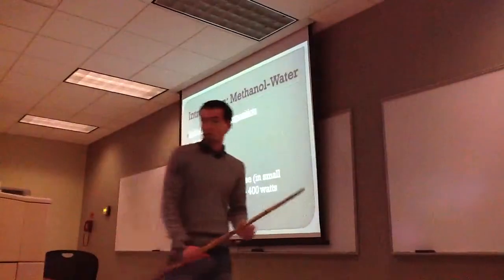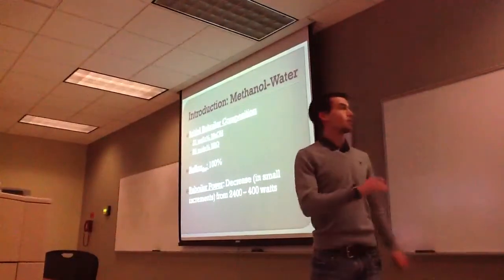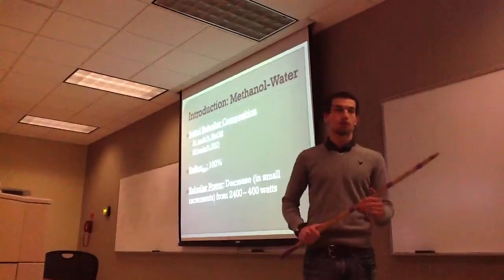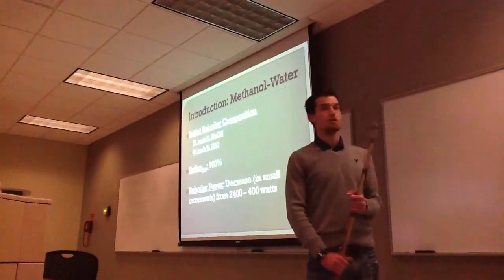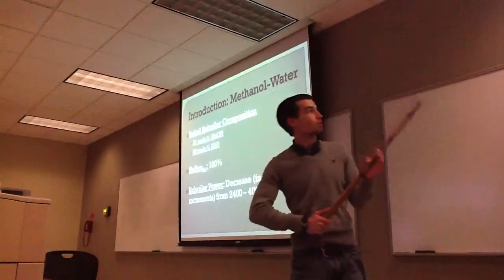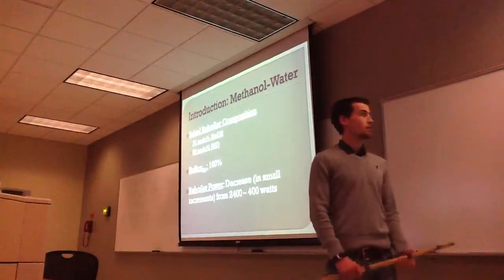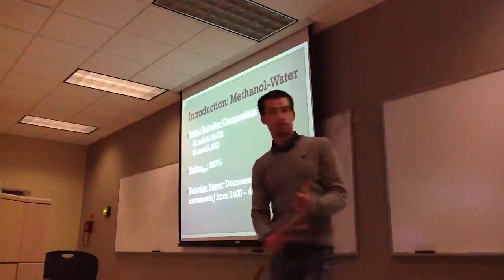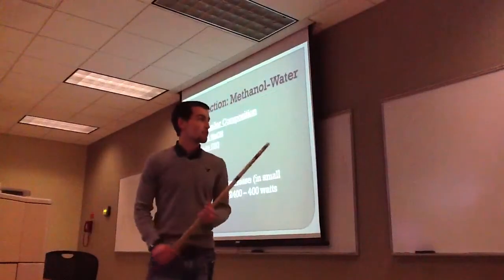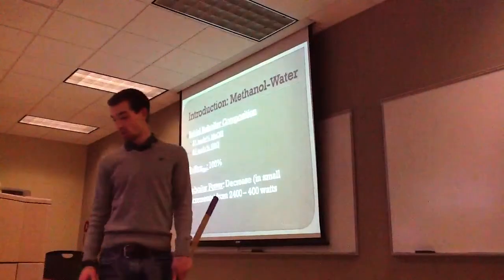The first two experiments we ran were just water experiments, and then we ran this one with methanol and water, and as we expected, the graphs changed a great deal. We started off with 31 mole percent methanol and 69 mole percent water, 14 liters total in the reboiler. We put the reflux at 100%, termed total reflux, started the reboiler power at 2,400 watts, and decreased in random increments all the way down to 400 watts.